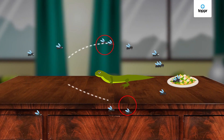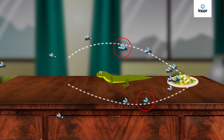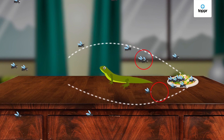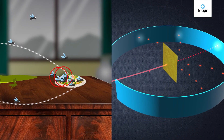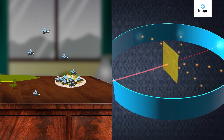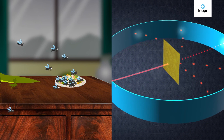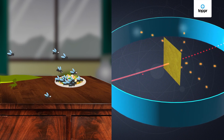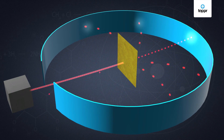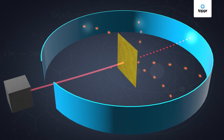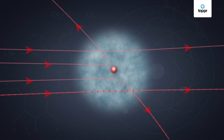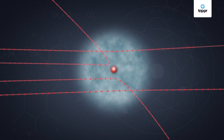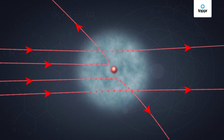Now, why do these flies change their path? Obviously, they have to because they fear they could be eaten up by the lizard. This also means that these flies correspond to those alpha particles which get slightly deviated from their path. Their path changes slightly, but they pretty much travel across the atom. So, like the flies were trying to avoid being eaten up, in the same way, alpha particles also try to avoid something in the atom.